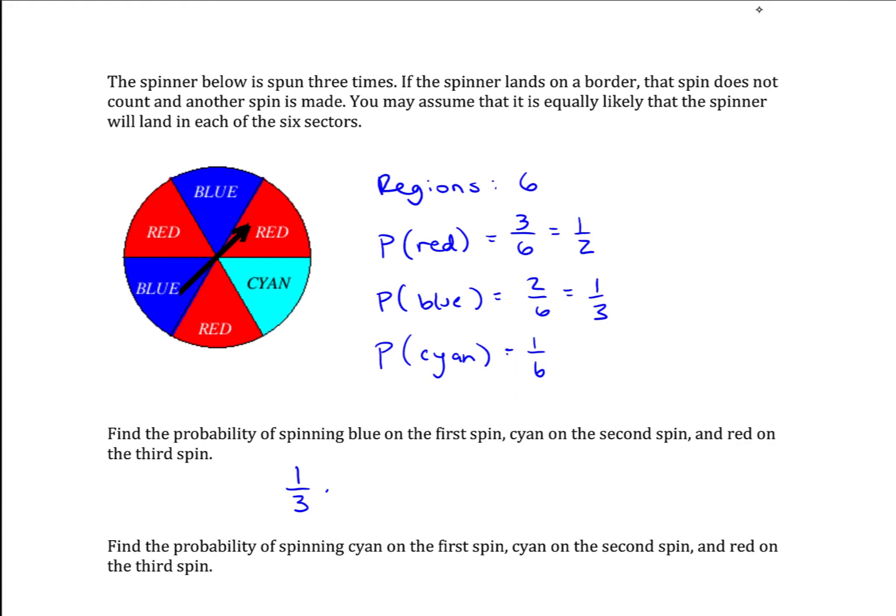These events are happening independent of one another. Usually when you have dependent events, you have some way of removing an item from your sample space with each trial. But here you can't remove any sector of the spinner. All six regions will always be there when you spin. So these events are happening independent.